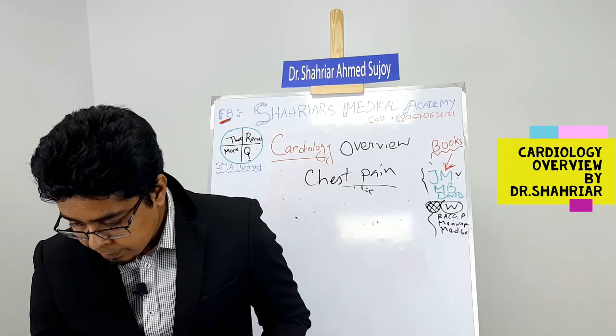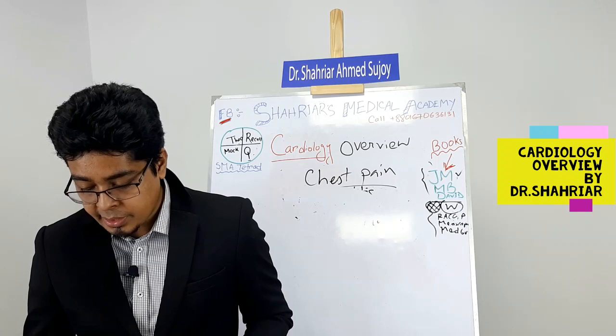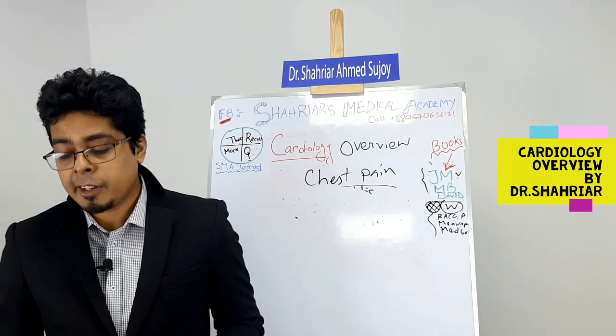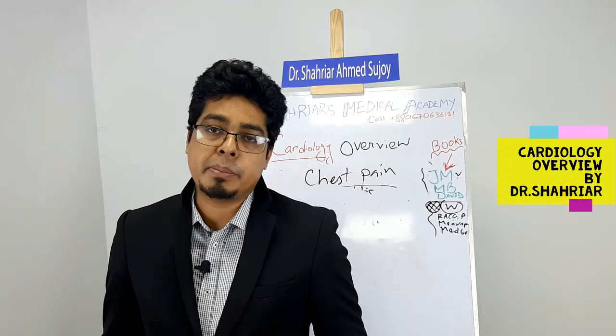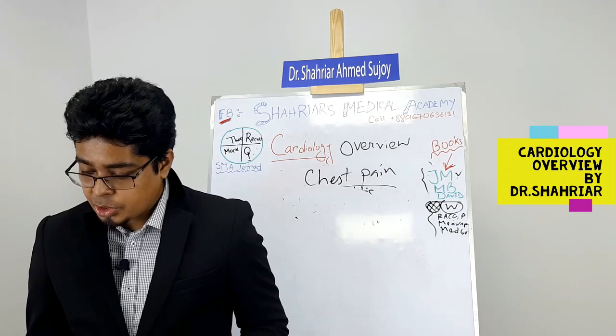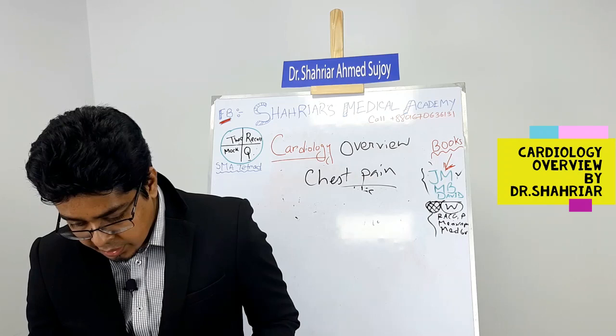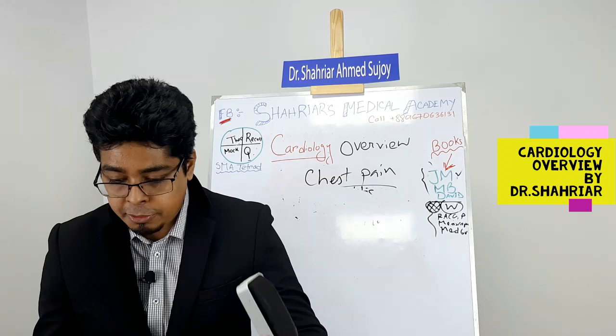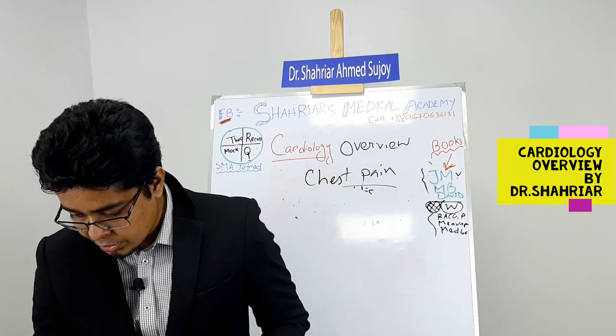Angina is given on page 449 (7th edition). From the angina section, learn the definition, why it happens, clinical features of chest pain, investigations, and treatment. Post-MI complications are given on page 456 (7th edition). Interesting management content is on page 457.